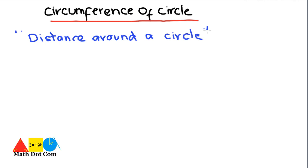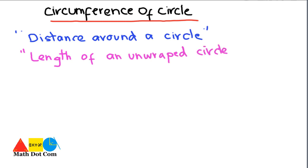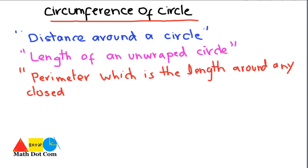We can also say that the circumference is the length of a circle if it were opened up. If we unwrap the circle and calculate its length, then the circumference is the length of that unwrapped circle. Circumference is also referred to as the perimeter, which is the length around any closed figure. For example, in the case of a square, rectangle, or parallelogram, we calculate the perimeter, while for a circle we calculate the circumference.